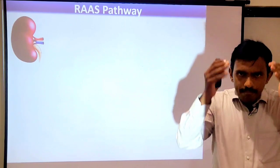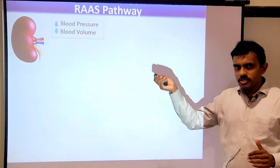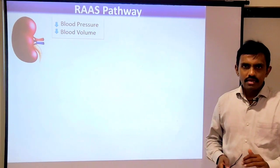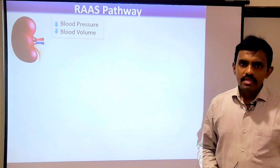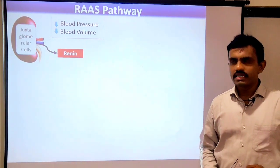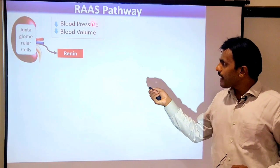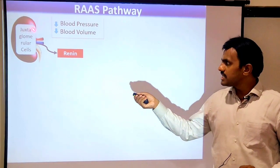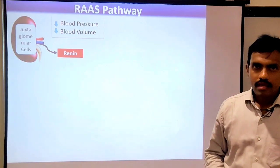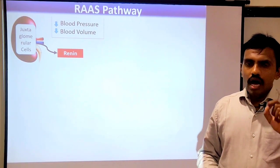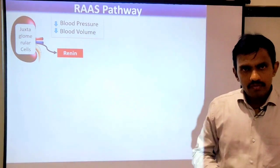Whenever your blood pressure or blood volume declines, this is immediately sensed by the kidney. There are specialized cells in the kidney known as juxtaglomerular cells. When your BP drops, they immediately start releasing a substance known as renin. Renin is important to run the RAAS pathway.